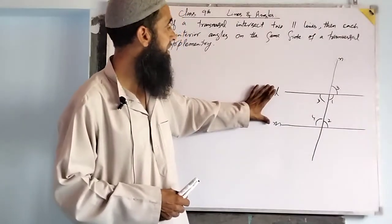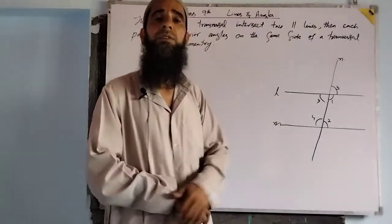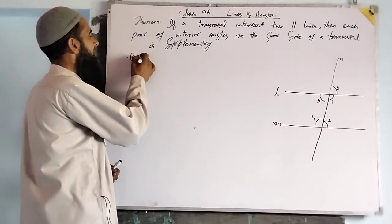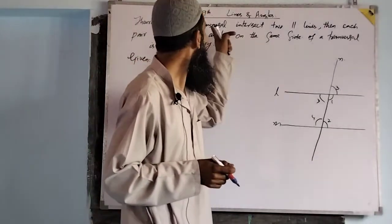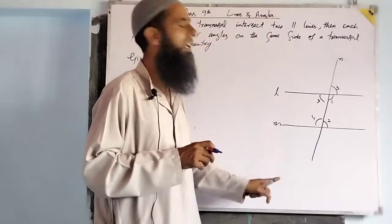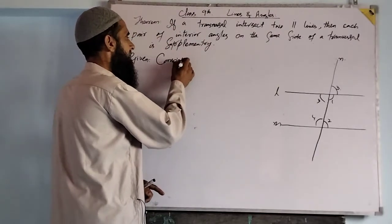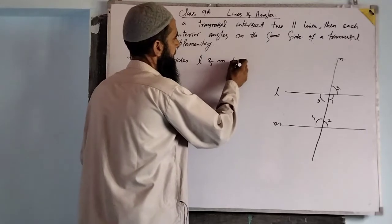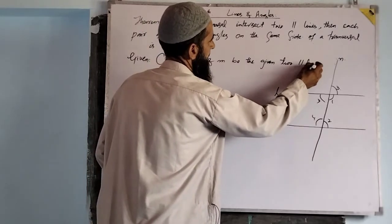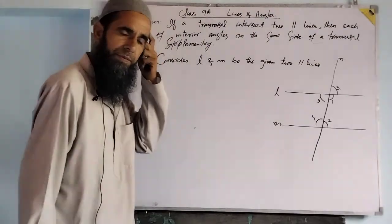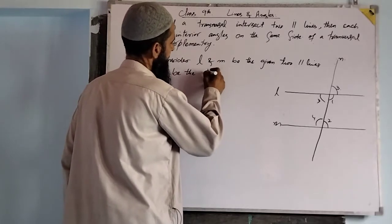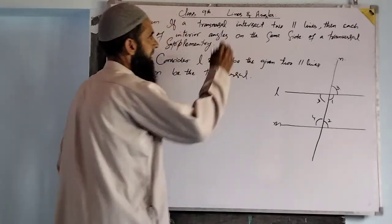We have here the given conditions: L is parallel to M and N is the transversal. Dear students, we will give the proof of this theorem. Taking the first given condition — we have a transversal intersecting two parallel lines L and M. Let L and M be the two given parallel lines and N be the transversal.